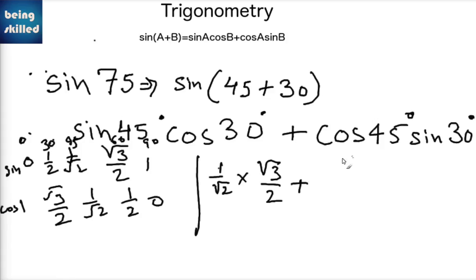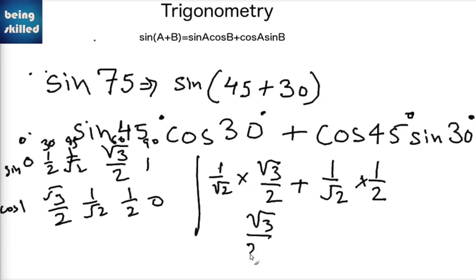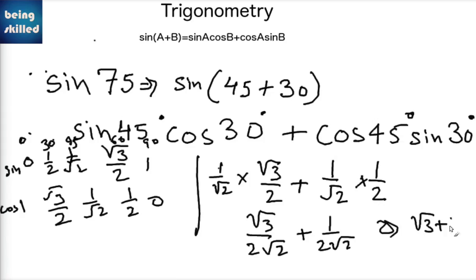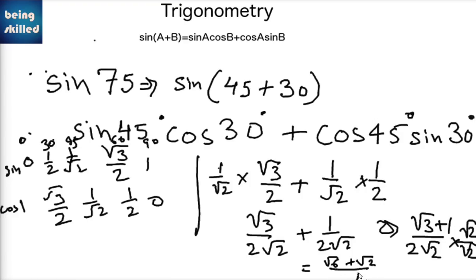So we have sin 45 · cos 30 plus cos 45 · sin 30, which gives (1/√2)(√3/2) plus (1/√2)(1/2), equaling √3/(2√2) plus 1/(2√2), which is (√3 plus 1)/(2√2). Multiplying by √2/√2 gives (√6 plus √2) upon 4. This is the desired value of sine 75.